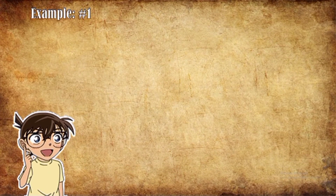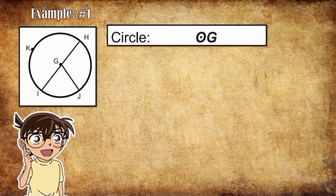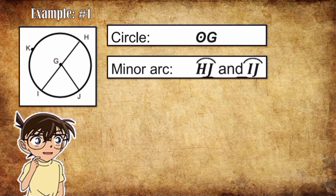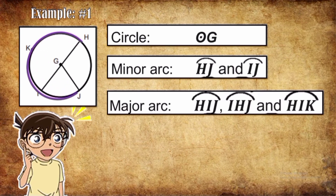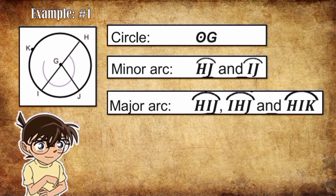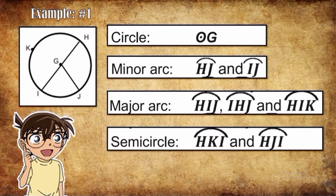Example number one. Let's use the given figure. This is Circle G. We have two minor arcs: Arc HJ and Arc IJ. We have three major arcs: Arc H-I-J, Arc I-H-J, and Arc H-I-K. And we have two semicircles: Arc H-K-I and Arc H-J-I.